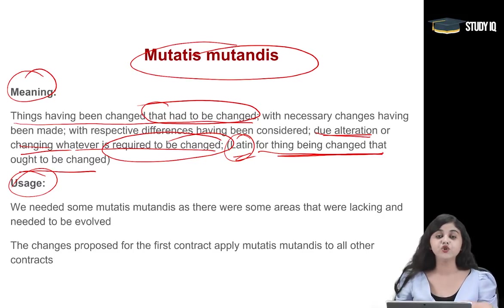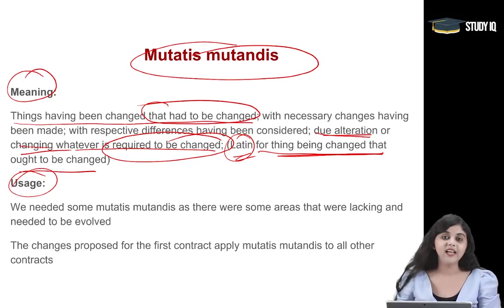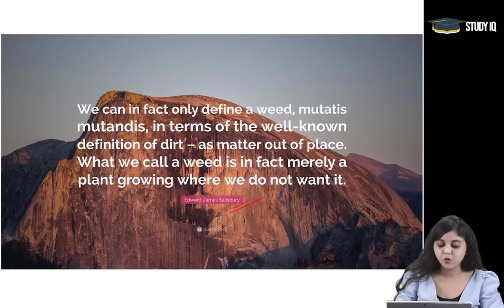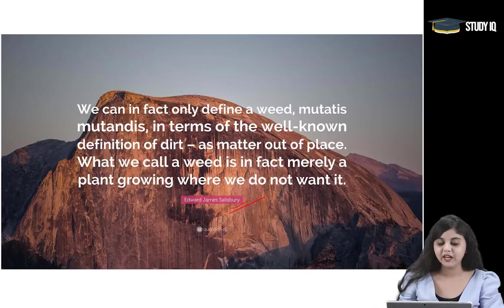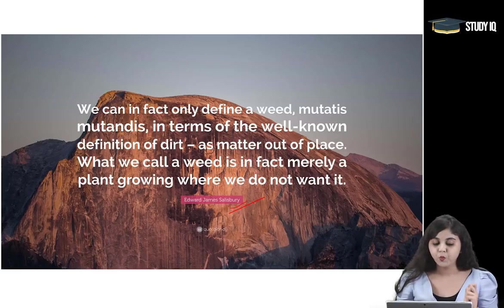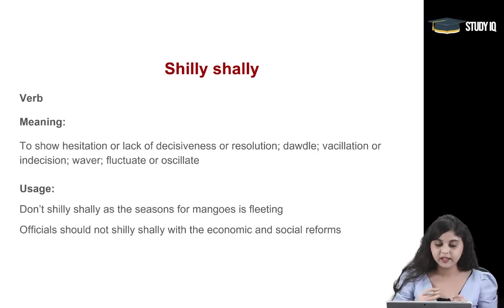These are things where change was required. That is called Mutatis Mutandis. This is also a famous quote by Salisbury: 'We can in fact only define a weed, Mutatis Mutandis, in terms of the well-known definition of dirt as matter out of place — what we call a weed is in fact merely a plant growing where we do not want it.' This is a very famous quotation about Mutatis Mutandis.